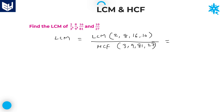Apply the same logic as before. Take the highest number, 16, and its first multiple, 16. Since 2 and 8 are both divisible by 16 — because 16 is a multiple of 2 and 8 — only check with 10. A number divisible by 10 must end with 0. So find the first multiple of 16 ending with 0: multiply 16 by 5 to get 80. Therefore, 80 is the LCM of 2, 8, 16, and 10.